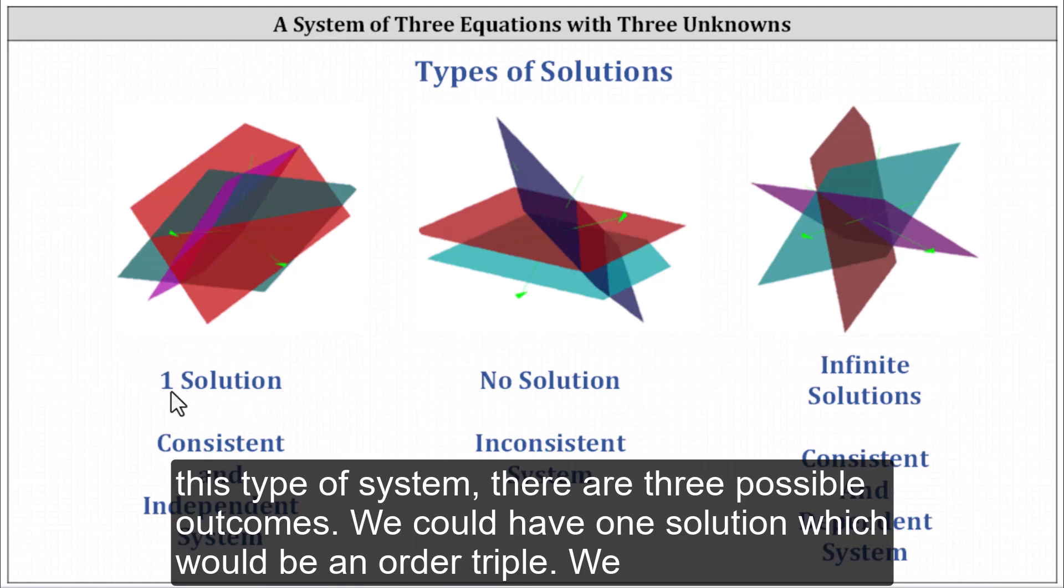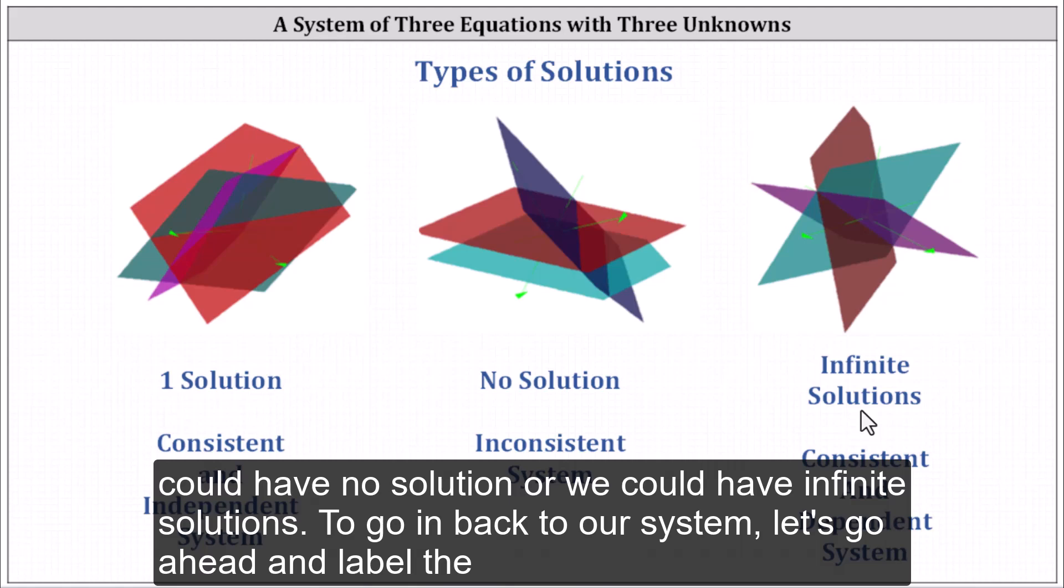We could have one solution which would be an ordered triple, we could have no solution, or we could have infinite solutions.